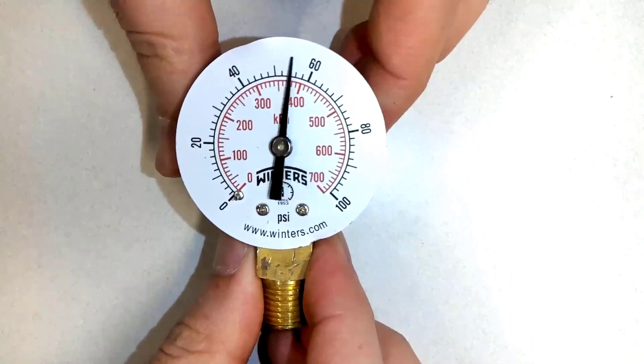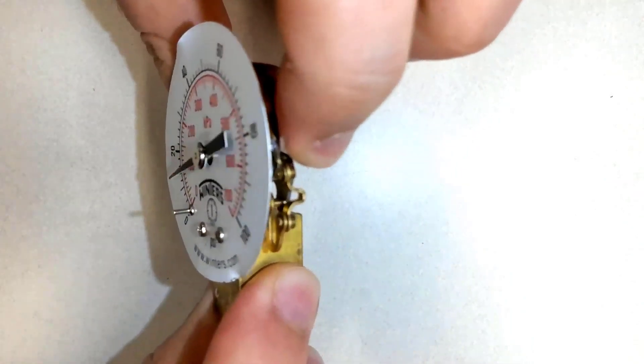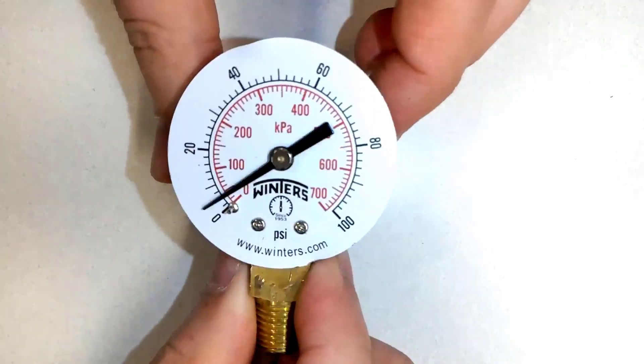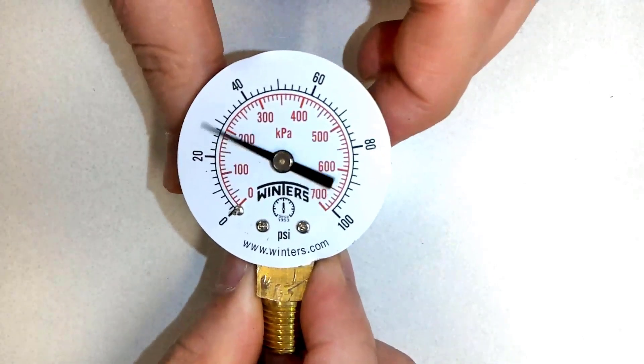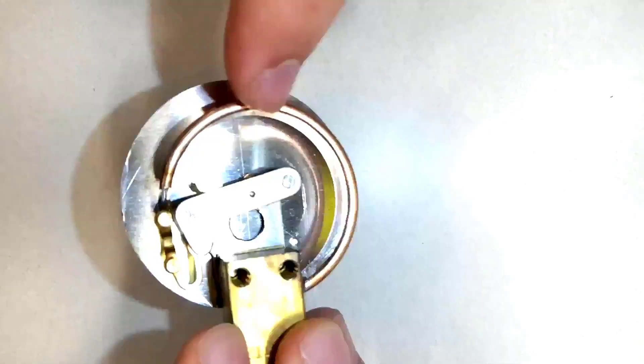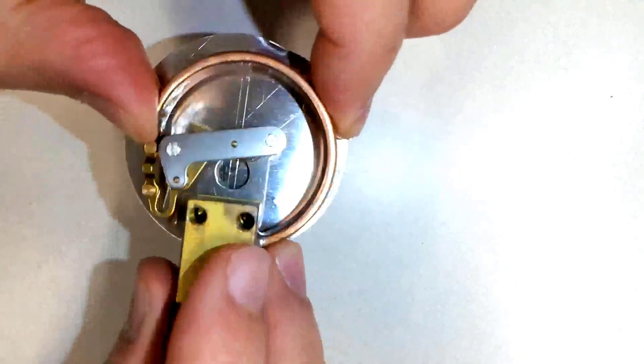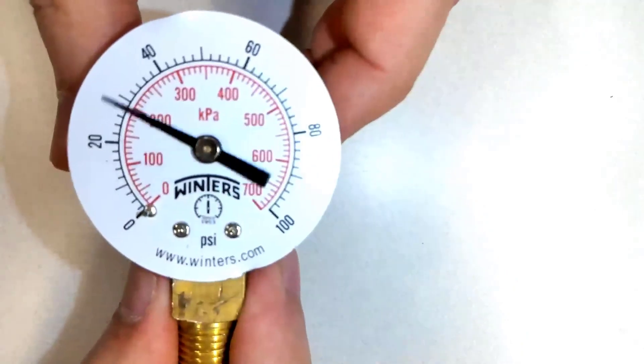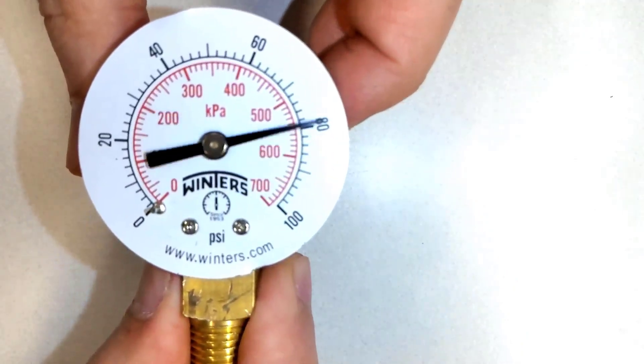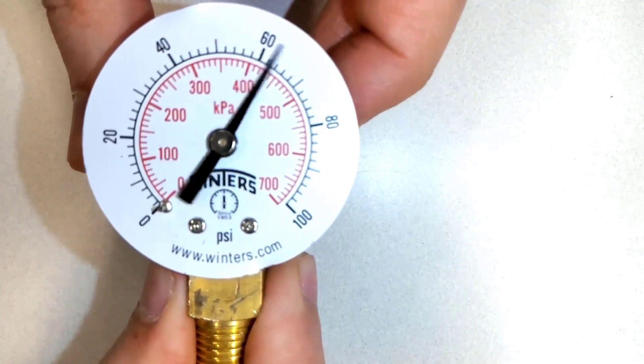As I apply pressure, the pointer changes and shows different pressures. If you have a fluid that tries to straighten the Bourdon tube a lot, the pressure is higher, and it goes down like this as I release the pressure.